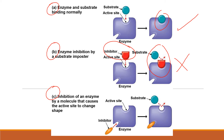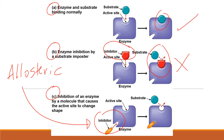Now let's look at image C for another way of inhibiting an enzyme. Here there is an inhibitor that is not going after the active site — it's actually going after another site within the enzyme called the allosteric site, which just means 'another site.' Once that inhibitor binds to the allosteric site, take a look at what happens to the active site: it changes shape. When the active site changes shape, the substrate can no longer fit, and the reaction comes to a stop.